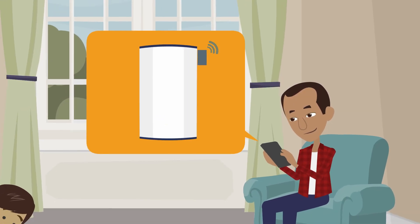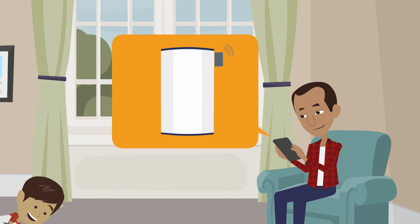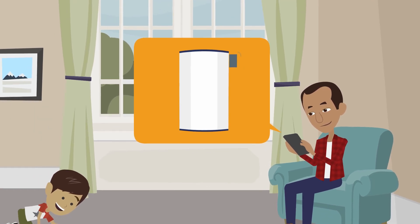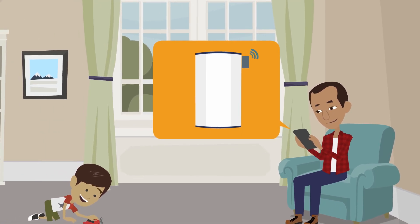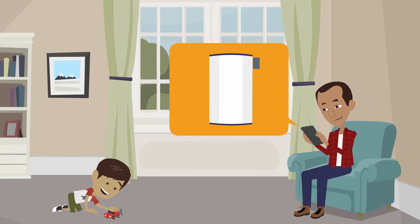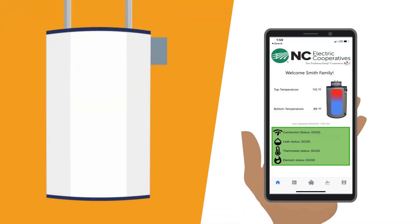Once your Wi-Fi enabled device has been installed by a Connect2Save technician, you will have access to monitor your smart water heater through an app. This app can be installed on your iOS or Android smartphone and provides you with real-time information and functionality for your water heater.